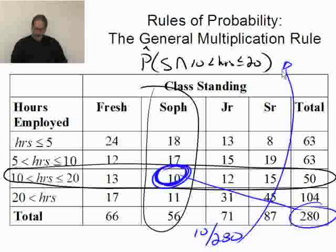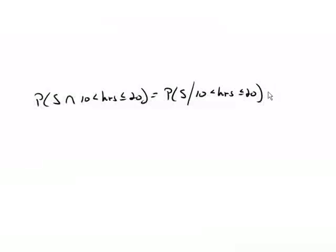Okay? So now, let's work it out and see what we get. According to the general multiplication rule, the probability of... Hang on, let me change colors here. The probability of a sophomore and they work from 10 to 20 hours is going to equal the probability of a sophomore given they work 10 to 20 hours times the probability that they worked 10 to 20 hours. Okay? All right. So, let's go back to the table and get some information here.